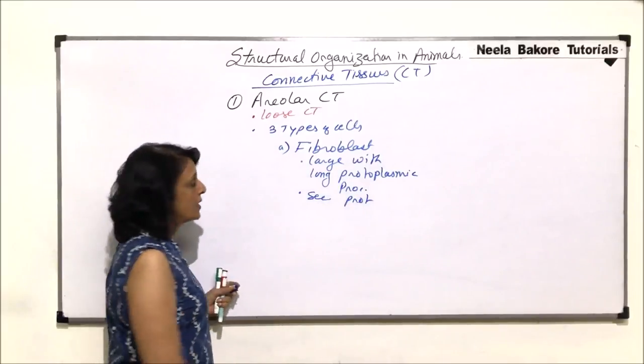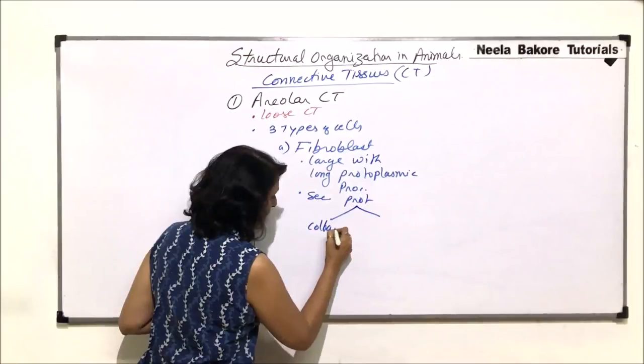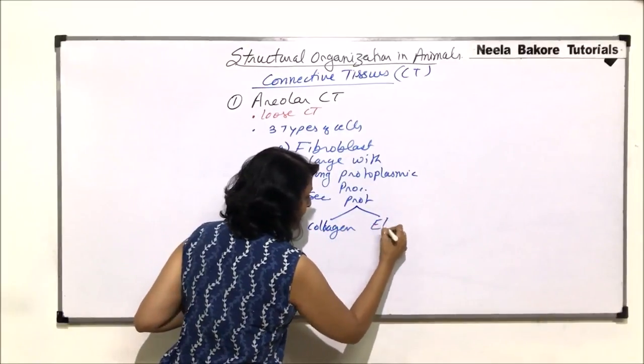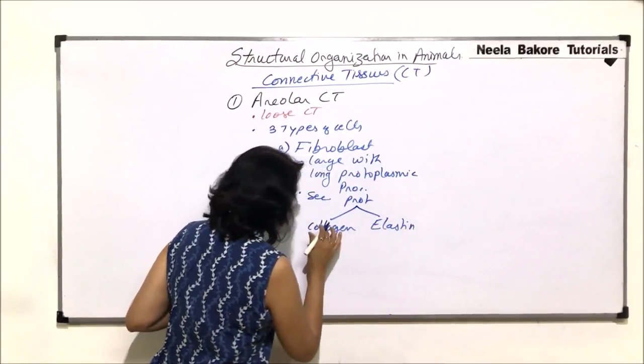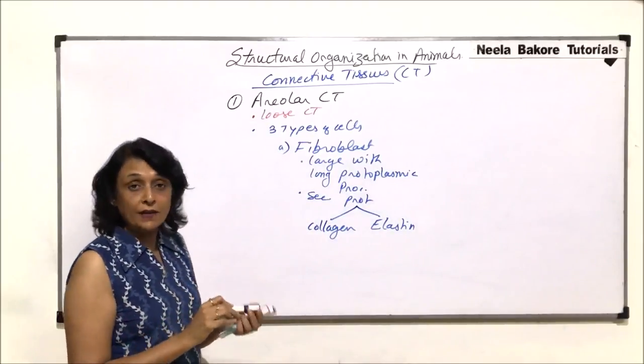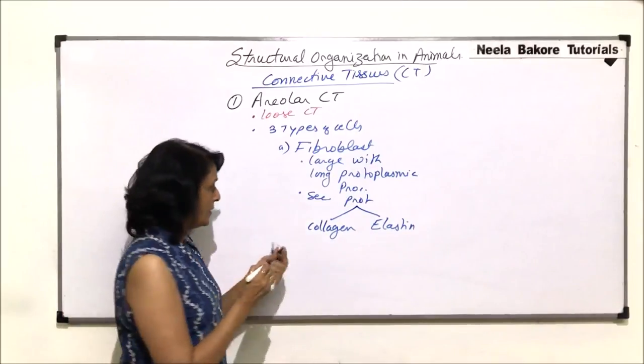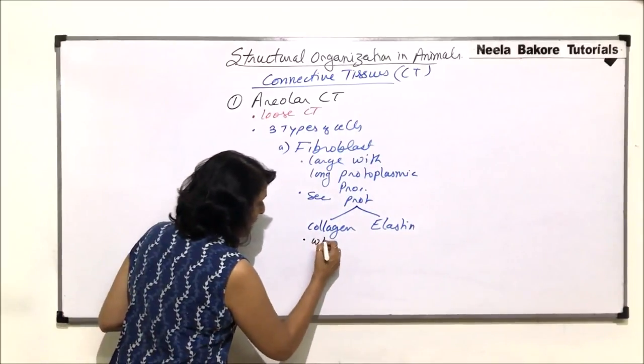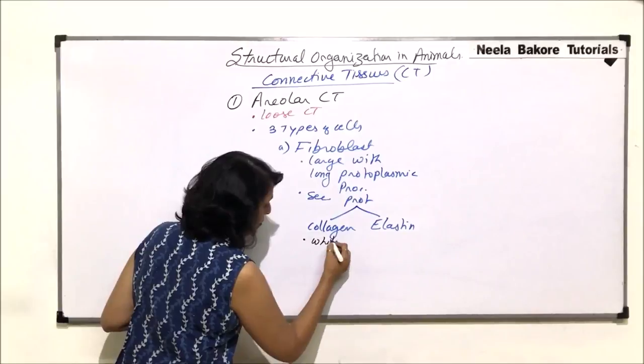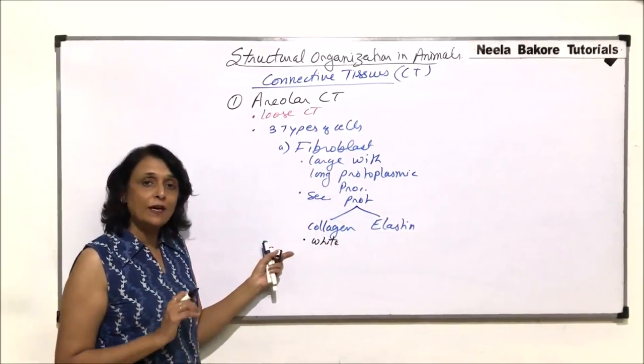Fibroblasts secrete proteins. The proteins which are secreted are two, collagen and elastin. Now this collagen fibers, they provide tensile strength and elastin fibers provide elasticity. Collagen fibers are white, the collagen protein is white and that is why these are also known as white fibers.